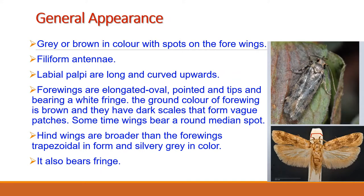Regarding the wings, the forewings are long, elongated, oval, and pointed at the tip, bearing a white fringe. The hindwings are light in color and their margins are deeply fringed. As for why they are called the pink boll worm — nothing about the adult insects is pink — but if you look at the larvae, the mature larvae show a pinkish hue, giving them their name.